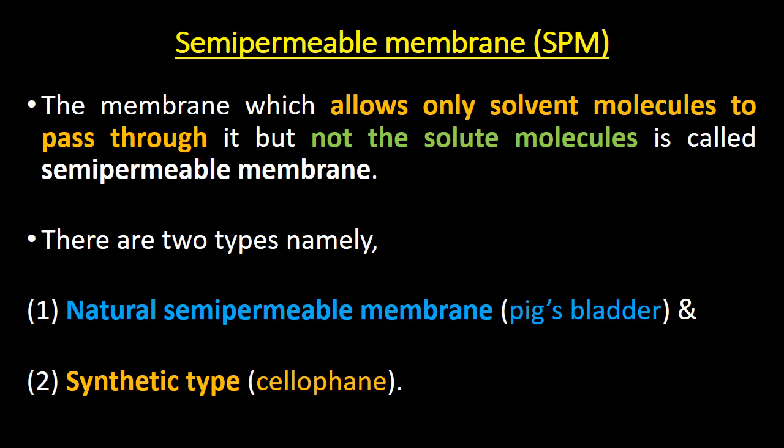There are two types of semipermeable membranes: natural semipermeable membrane and synthetic semipermeable membrane. An example of a natural membrane is a pig's bladder. An example of a synthetic membrane is cellophane.